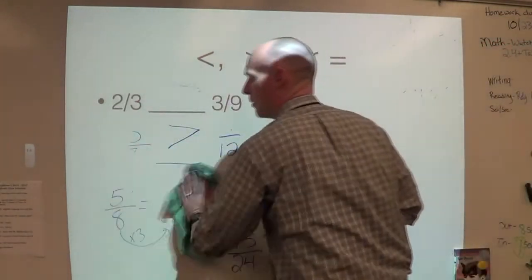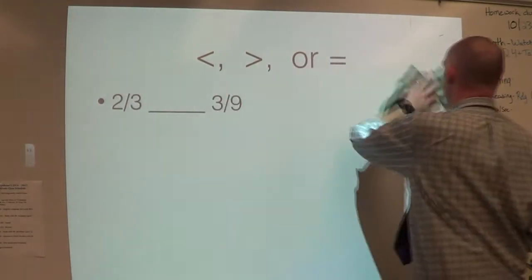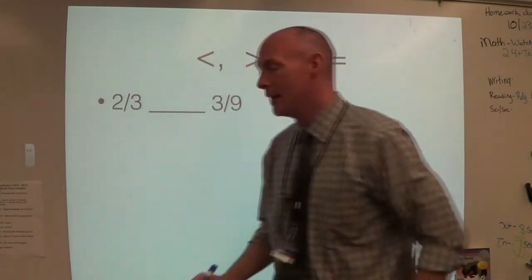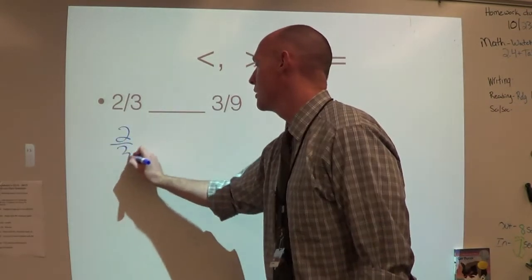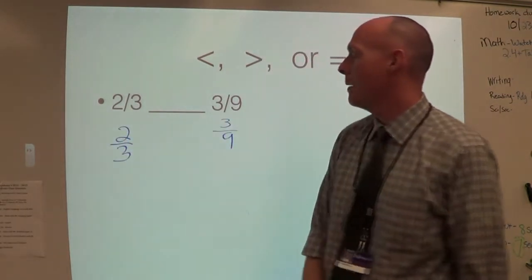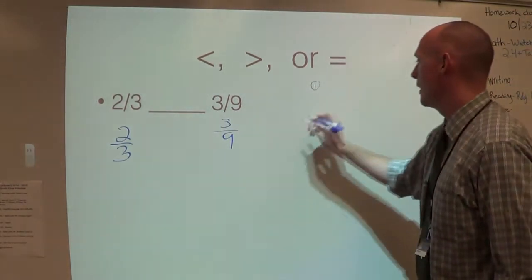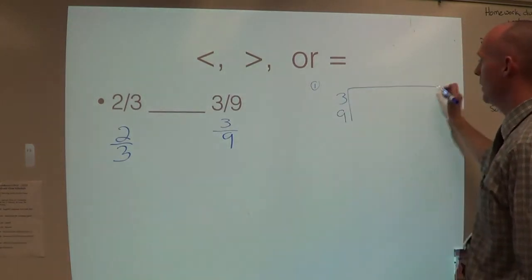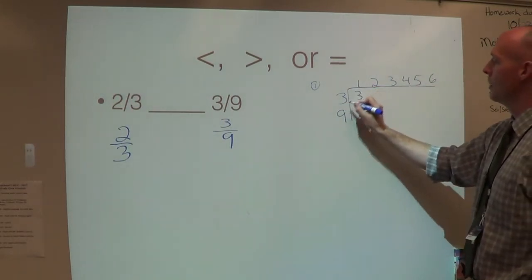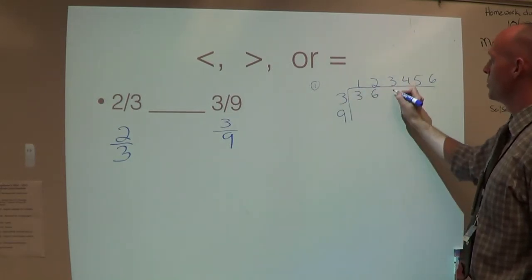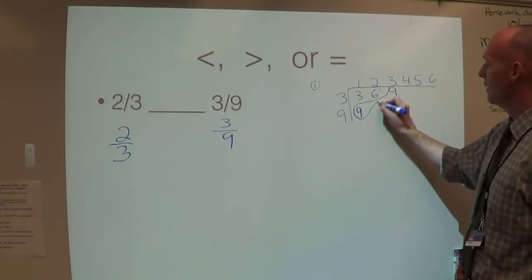This time we are going to compare two-thirds and three-ninths. Step one, we have to find the least common denominator. I'm going to take my denominators, three and nine, and find the least common multiple. Three times one is three, three times two is six, three times three is nine. Nine times one is nine — there is my least common denominator.